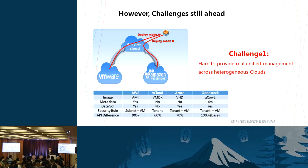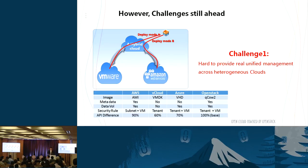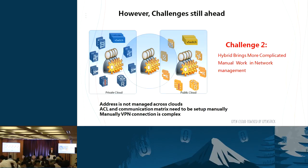Across various dimensions — including image types, metadata capabilities, data volumes, security rules, and API differences — there are many differentiated capabilities across these heterogeneous cloud choices. It is really hard for any cloud tenant or administrator to provide truly unified management experiences across all these heterogeneous cloud backends, and when backend capabilities are not available, it becomes even more difficult for pure software-based adaptation to smooth out those differences.